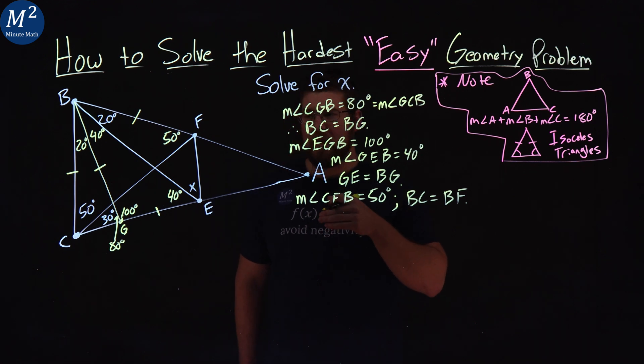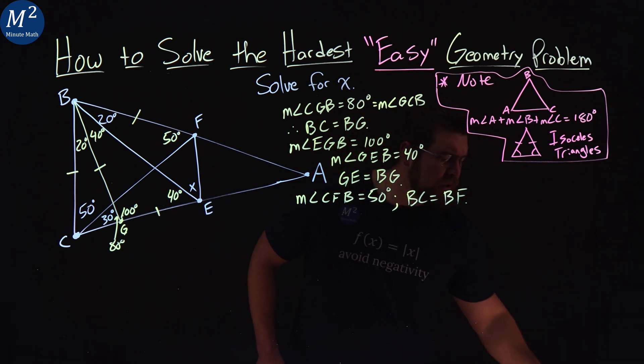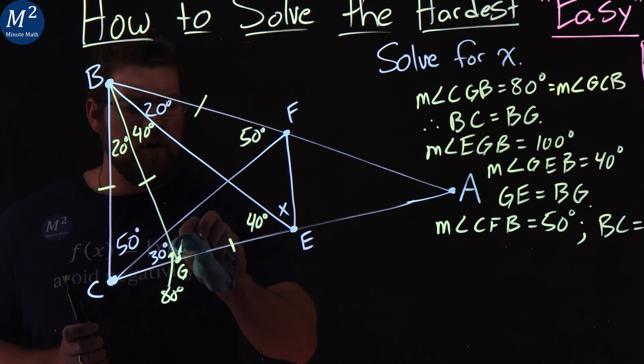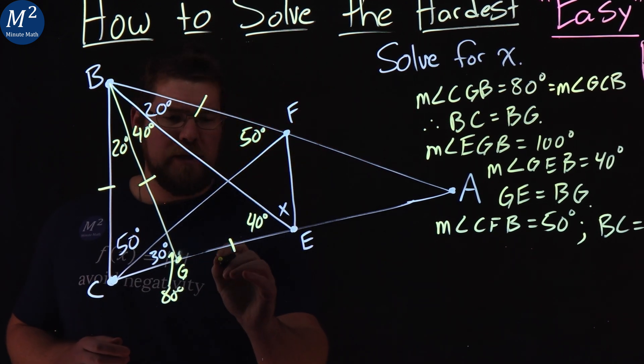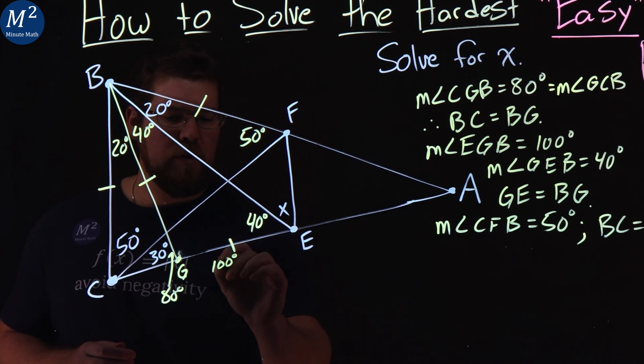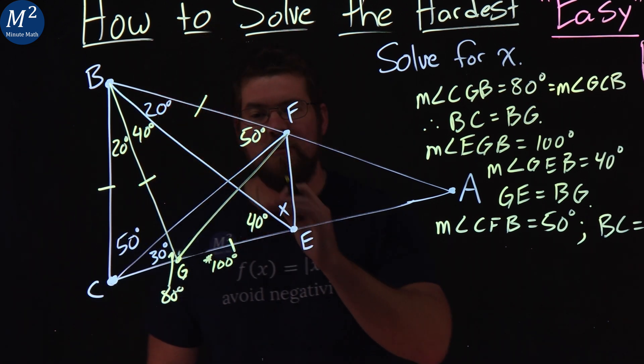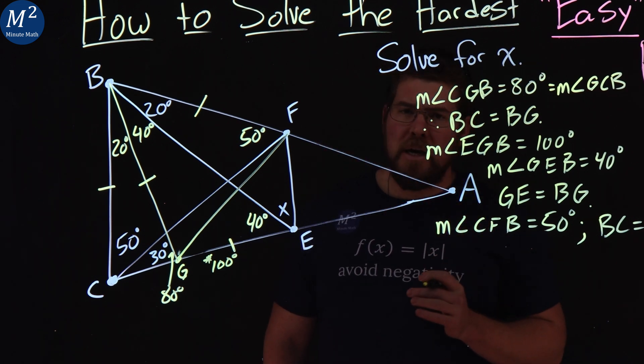Now I'm going to do something tricky. I'm going to draw a line from G to F. And in doing so, I'm going to have to erase this 100 degrees, but I don't want to forget that that's there. So I'll make a little note to myself right here on the side that we have 100 degrees kind of going on here. So I'm going to draw a line here from G to F. And again, bear with my line. And we're going to try to find some angle measurements here.